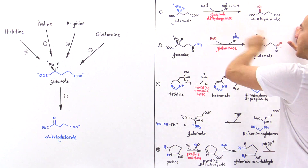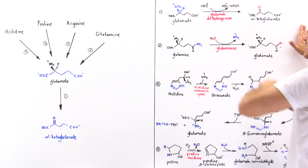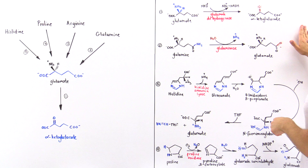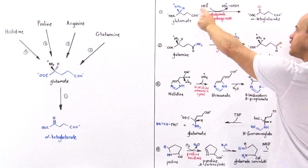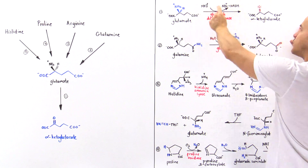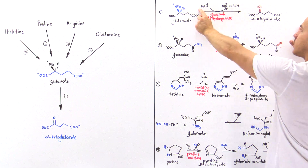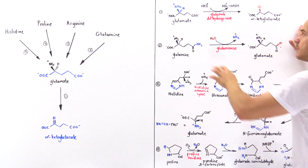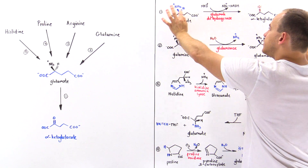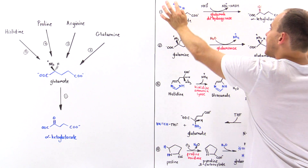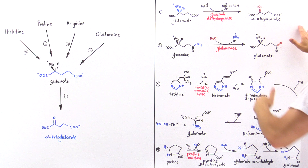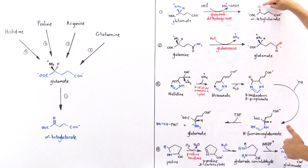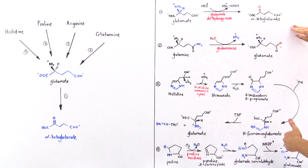This step is catalyzed by glutamate dehydrogenase. It uses the oxidation-reduction power of NAD+ to essentially eliminate this amino group, and then we attach an oxygen to form the carbon-oxygen double bond. So this is our alpha-ketoglutarate.